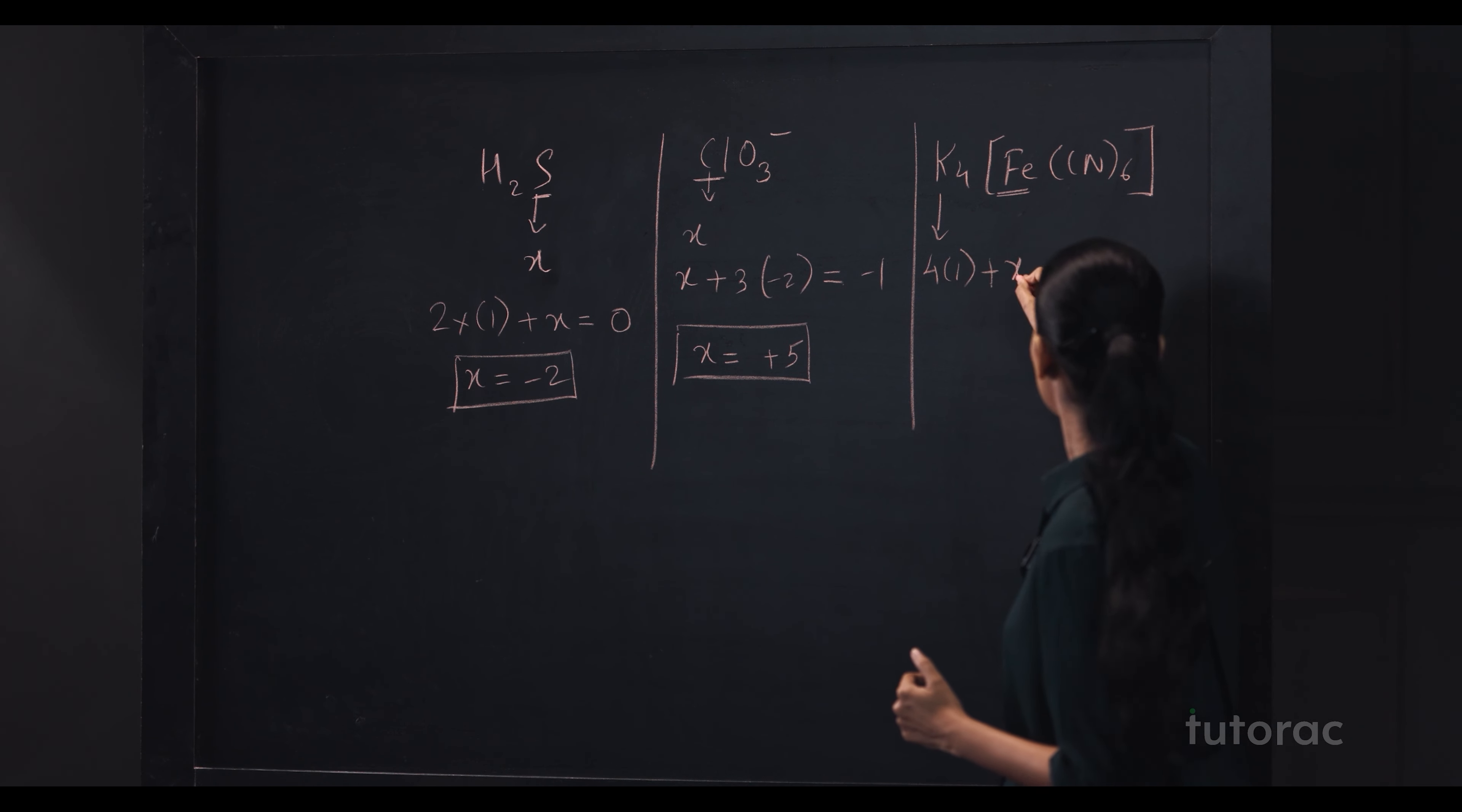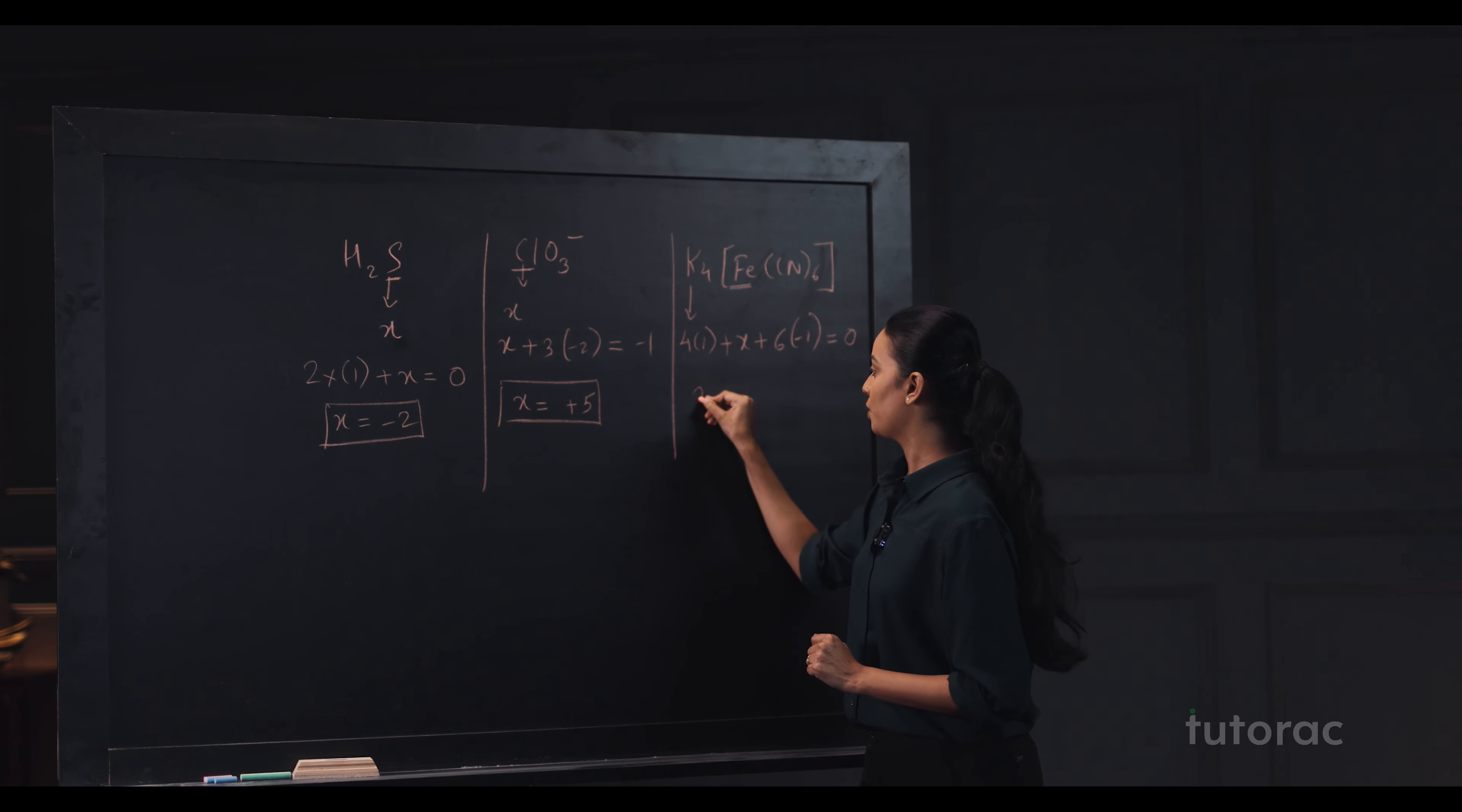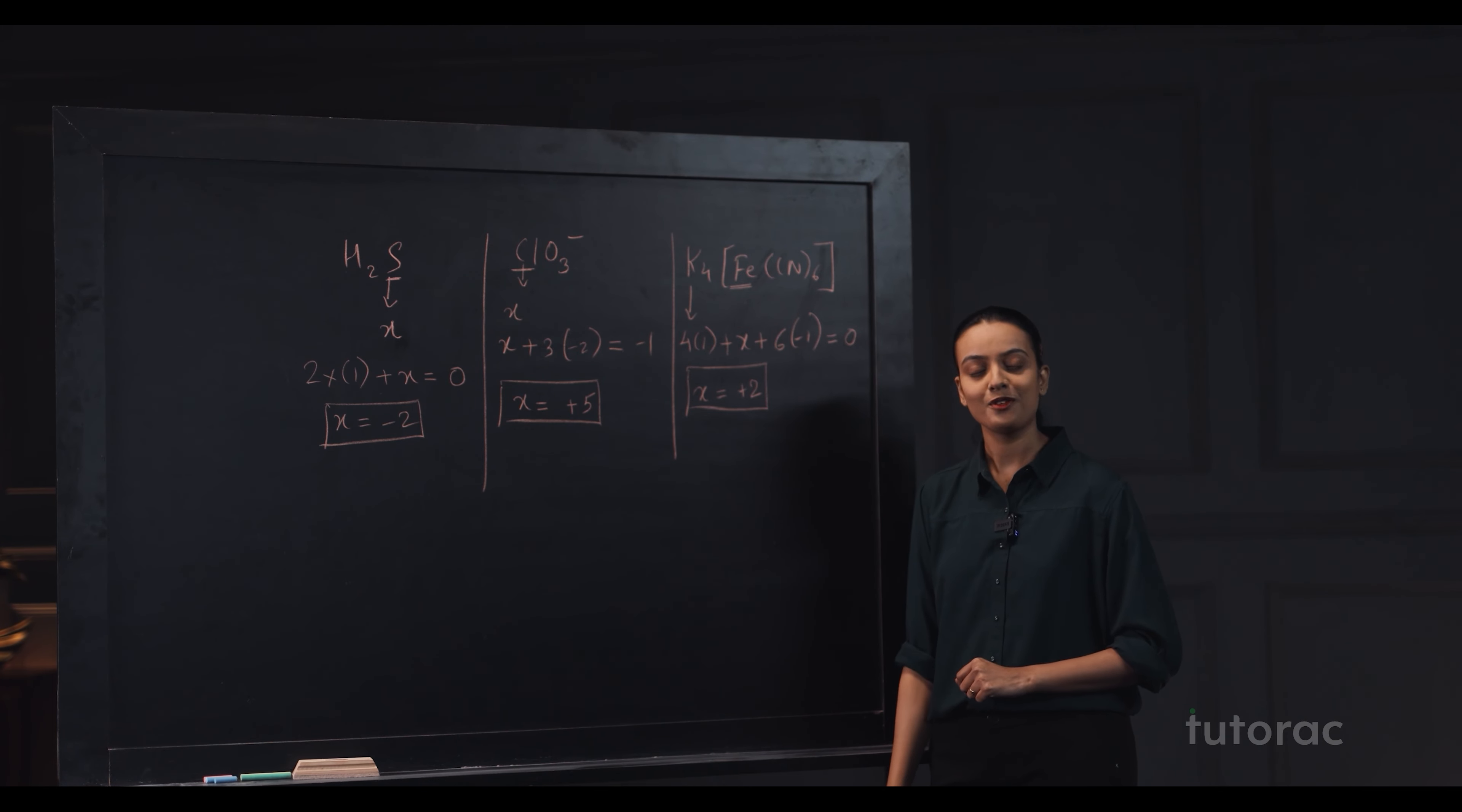So, 4 into 1 plus oxidation number of iron. Let's take it as X plus 6 cyanide is there. So, 6 into minus 1 that is oxidation number of cyanide and equate it to 0. You will get X equals to plus 2 which indicates the oxidation number of iron.